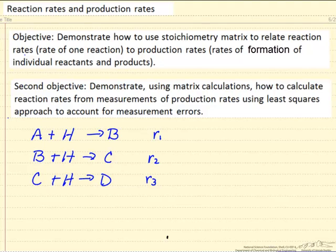The second objective is, using matrix calculations, to calculate the rates of reaction, calculate R1, R2, and R3, if we have measurements of the rates of A, B, C, D, and H. Using a least squares approach to account for the fact that these measurements are going to have errors, and so the stoichiometry is not going to be perfectly satisfied because of that.